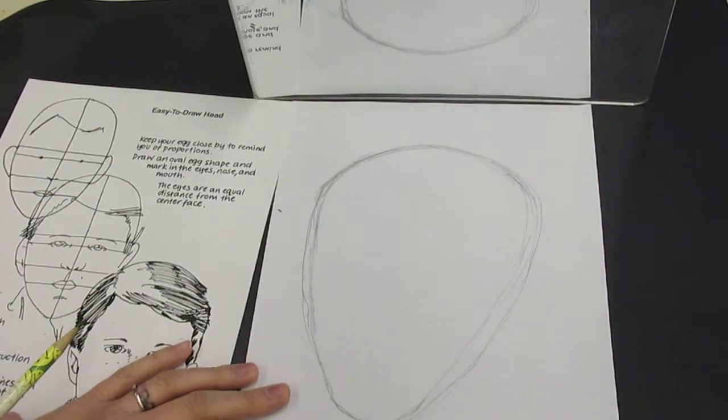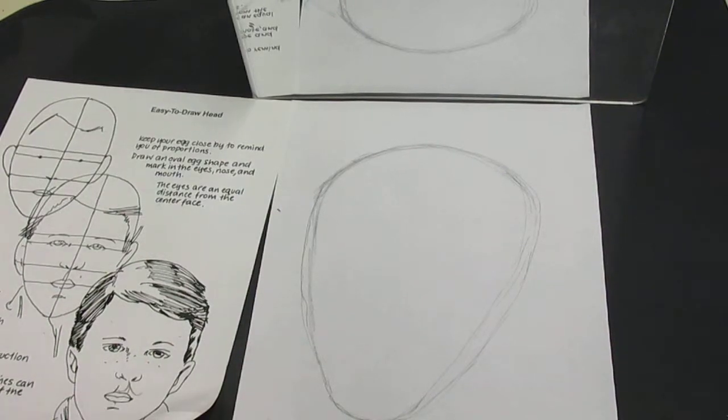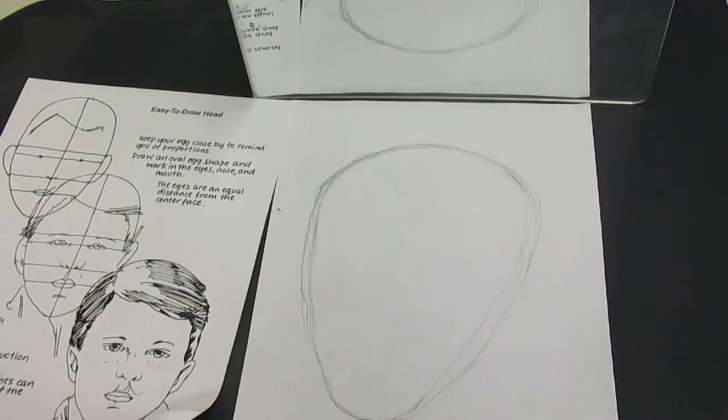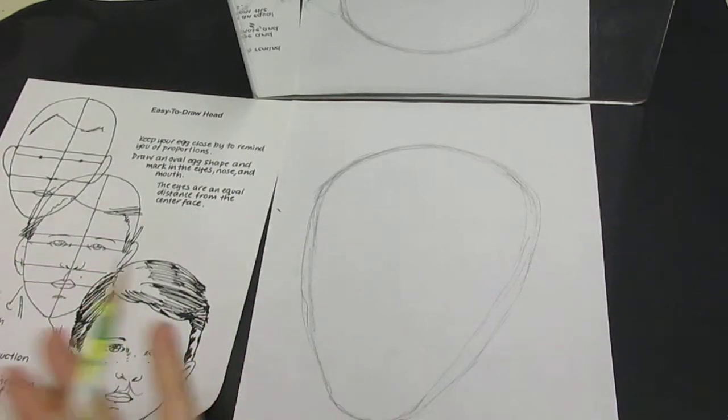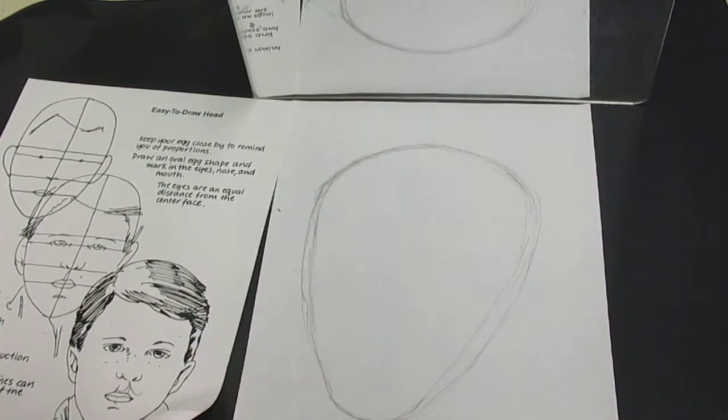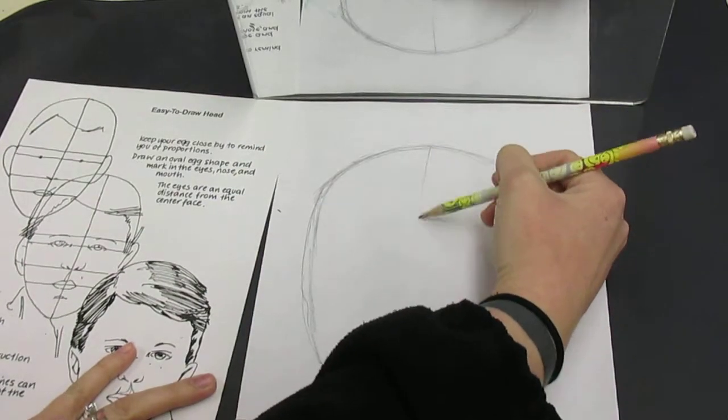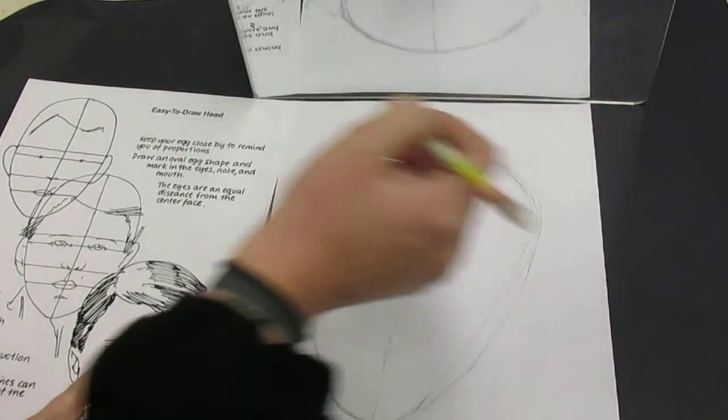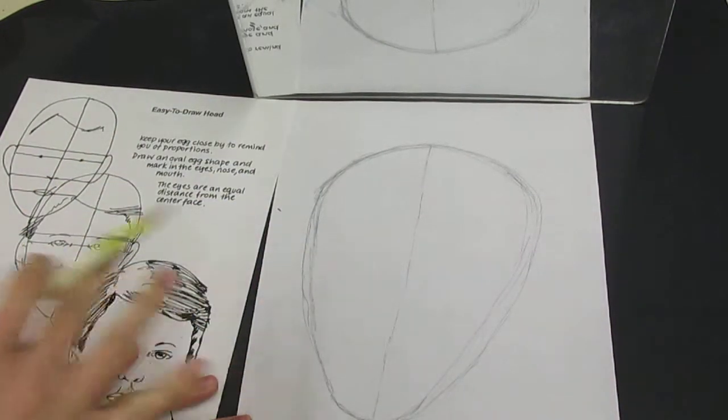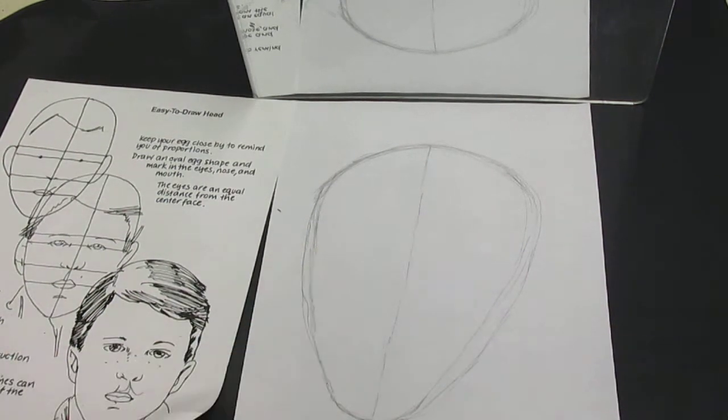Now that I have my basic head shape drawn, I need to start dividing up those proportions. Of course, everybody's face is different and almost nobody's face is perfectly symmetrical, but there are some general guidelines that we can follow, especially when we're first learning. So the first thing we're going to do is divide our face vertically down the center. This is a super light line because I'm going to be erasing this later.